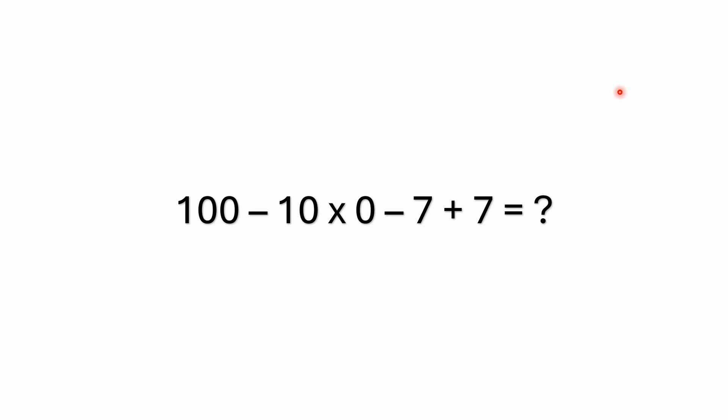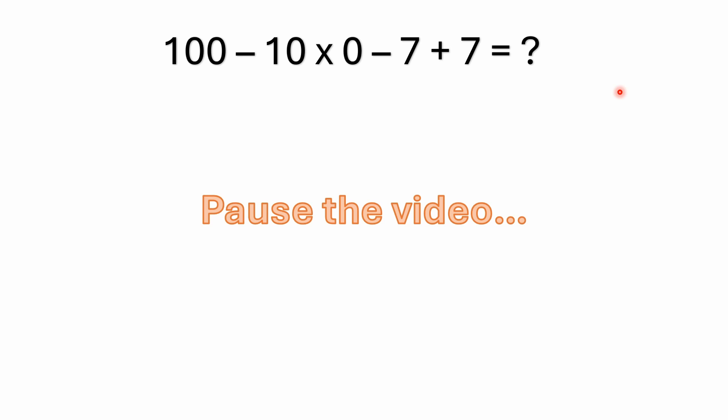Hello everyone, welcome back to the math puzzle crash course. We have a simple mixed operations problem here that we'll jump right into. It's 100 minus 10 times 0 minus 7 plus 7 equals what. So if you'd like to, you could pause the video now and work this one out by yourself.